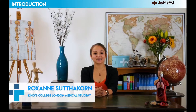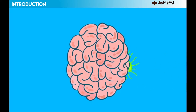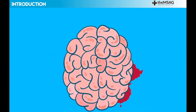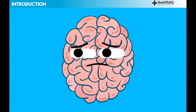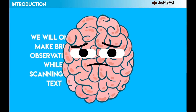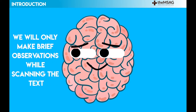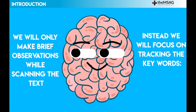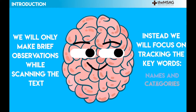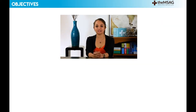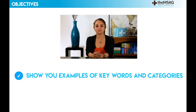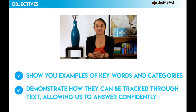In this video we will cover best techniques for answering 'does the conclusion follow' questions. These questions can give you a lot of overlapping information upfront, and our brains can struggle to manage all the different keywords and categories. To cope with this, we will only make some brief observations while scanning the text and instead focus on tracking the keywords such as names and categories from each conclusion. Our objectives over the next eight minutes or so are to show you examples of keywords and categories and demonstrate how they can be tracked through your text, allowing us to answer confidently.